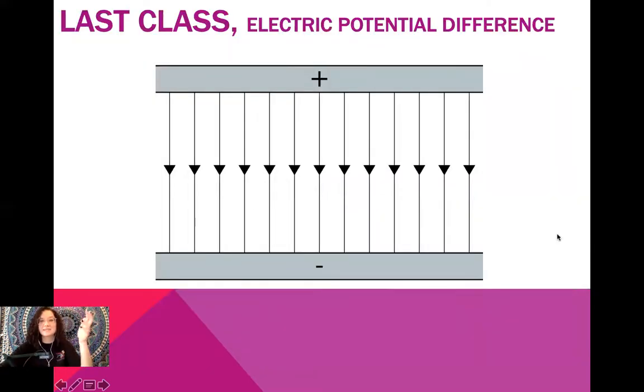All right, so last class we talked about electric potential difference, and remember that's measured in volts, and it kind of has to deal with that electric field that we have from our positive to our negative. Our electric potential difference, it's that pressure that causes particles to move in the direction that those field lines are pointing. So that's gonna be really important today as we begin drawing circuits.